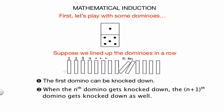I claim that the answer is yes, and the logic goes like this. We're given that the first domino gets knocked down. By the second condition, that tells us that the second domino will get knocked down as well, since it's the one right next to the first. Then again by the second condition, the third domino will get knocked down because it's right next to the second. And the fourth domino will get knocked down because it's right next to the third, and so on. So every single domino will eventually get knocked down.